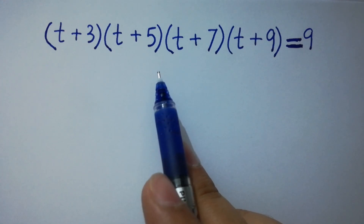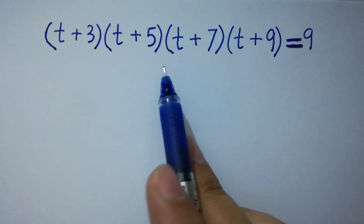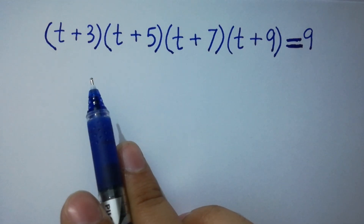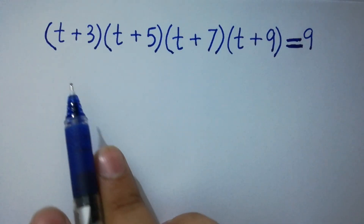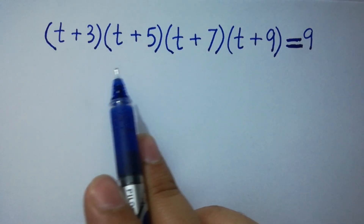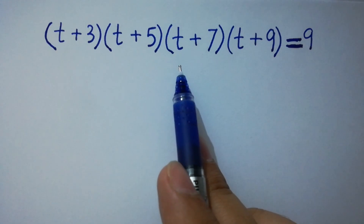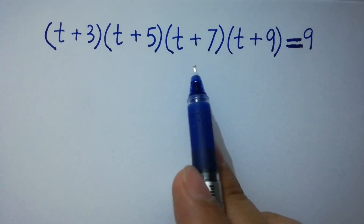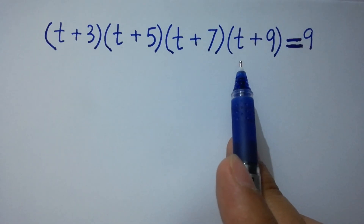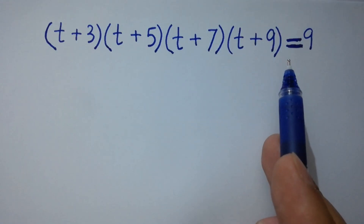Hello friends. Find the value of t from this problem: (t+3)(t+5)(t+7)(t+9) = 9.